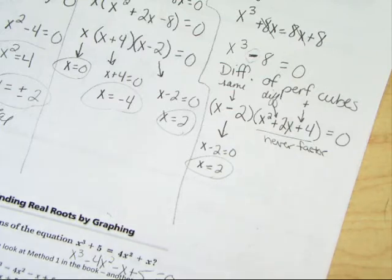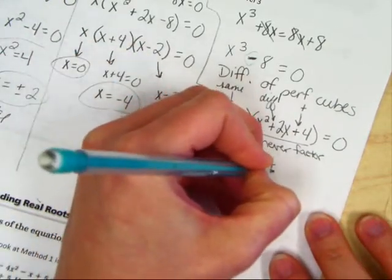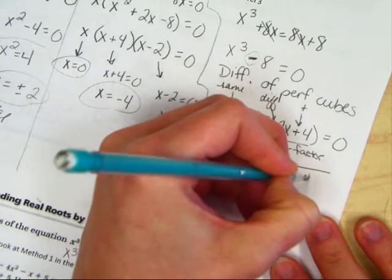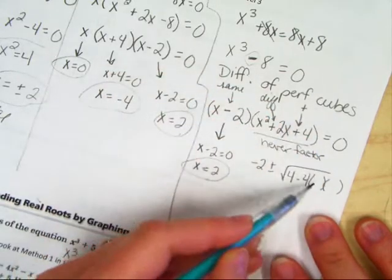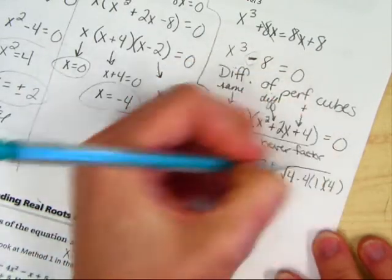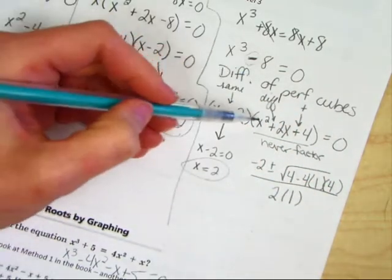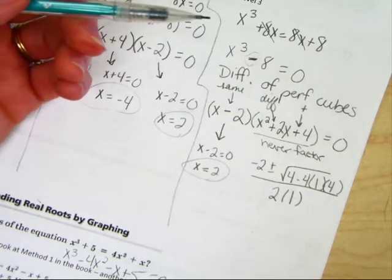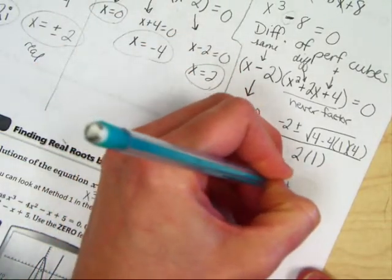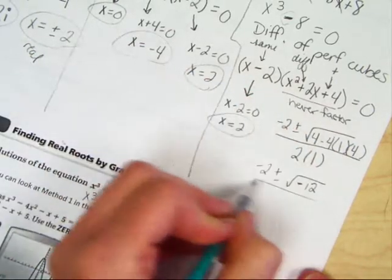Okay, so negative b is negative 2. Plus or minus square root of b², so 2² is 4, minus 4ac, so a is 1, c is 4, all over 2a, and a is 1. You remember this, you might need to go back to chapter 4, we did this in 4-7, the quadratic formula. So it's negative 2, plus or minus square root of, well this will be 4 - 16, so negative 12 inside of there, all over 2.